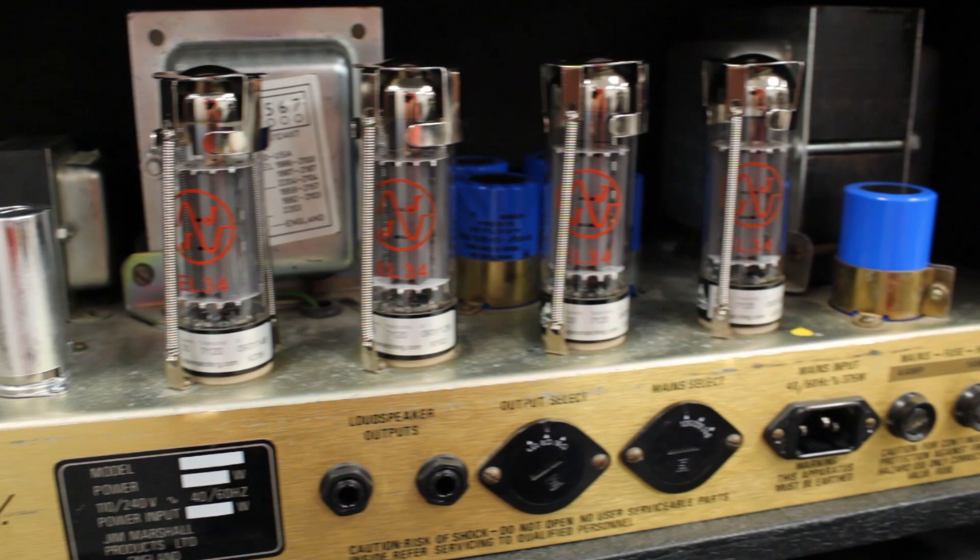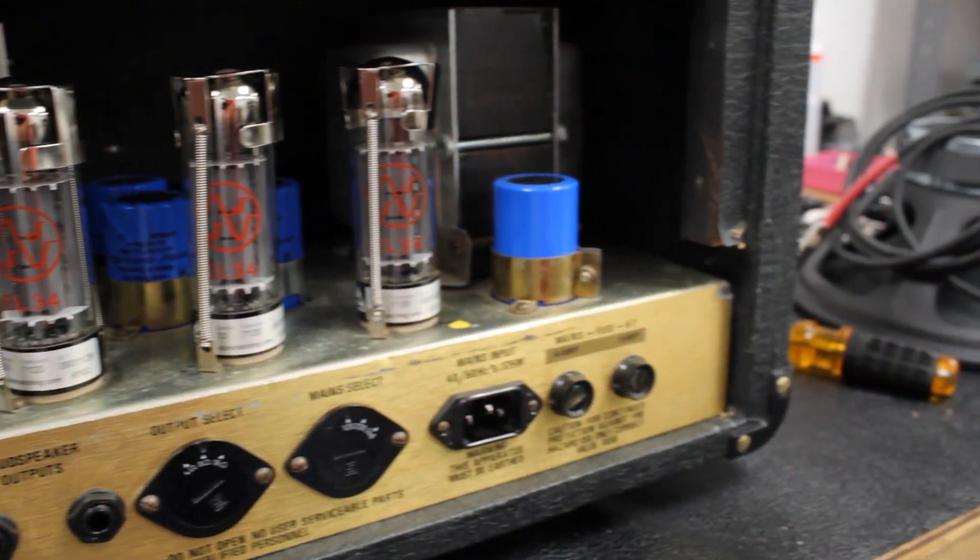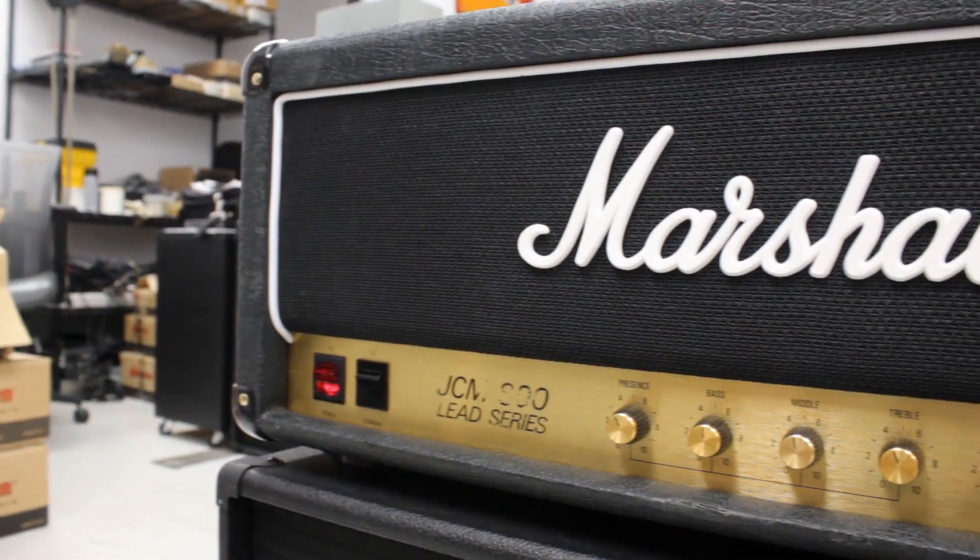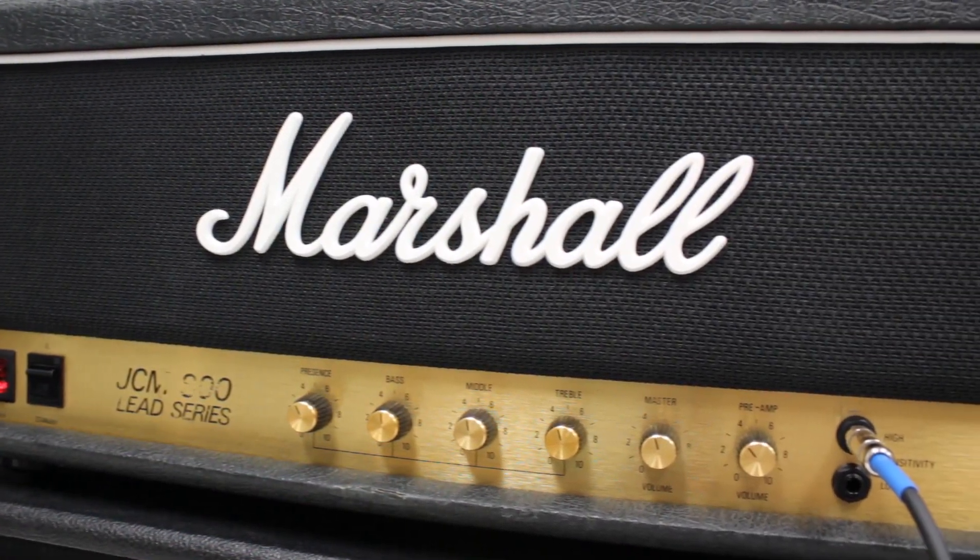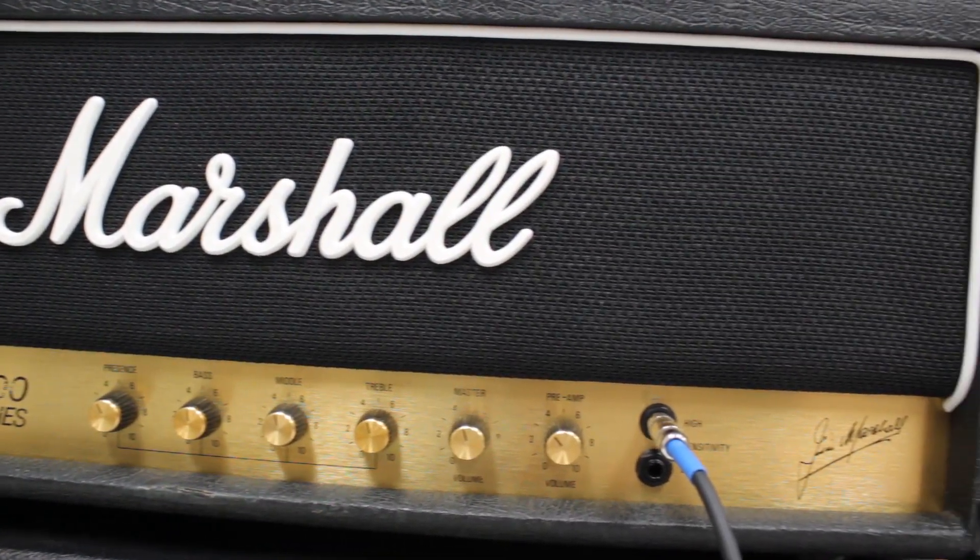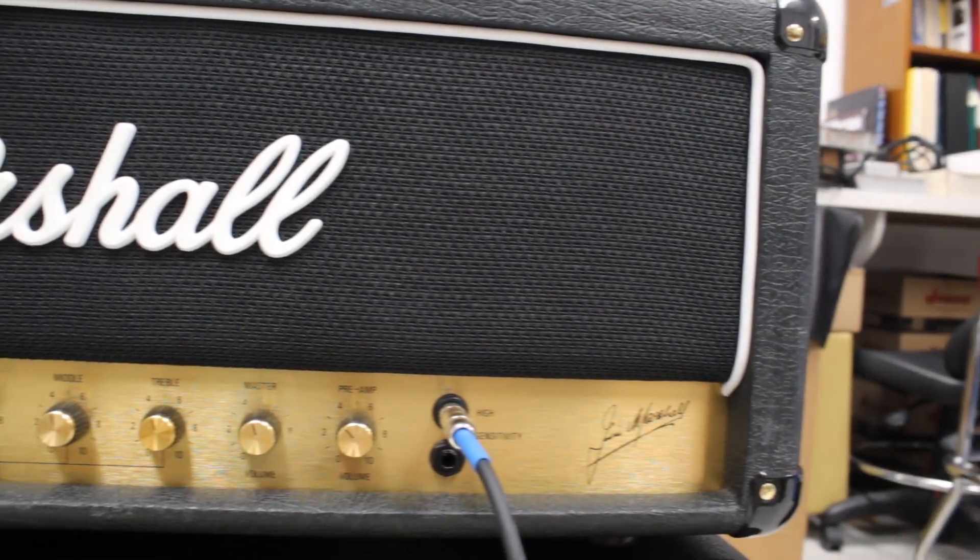Some amplifiers, such as cathode biased amps, are generally good to go without any adjustments, but many amplifiers have a fixed bias. These amps require bias adjustment for the tubes to operate properly. This video will take you through the process of biasing this type of amp.